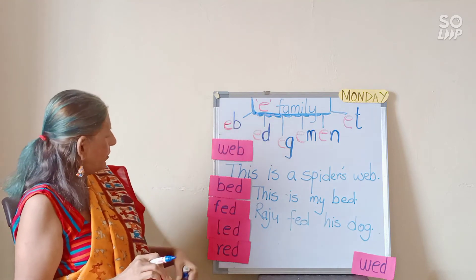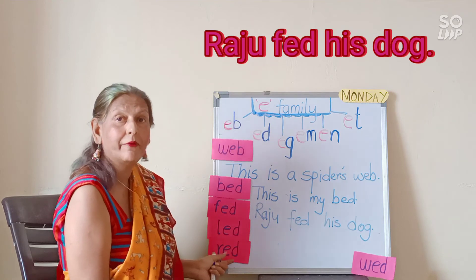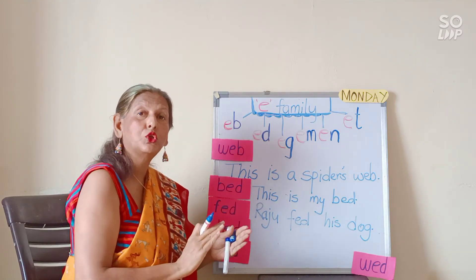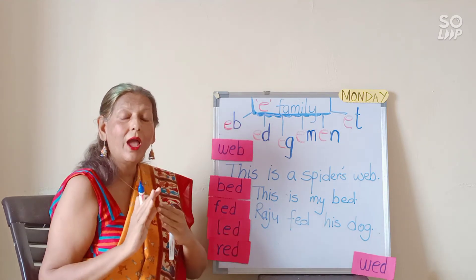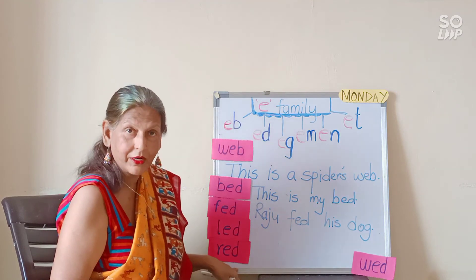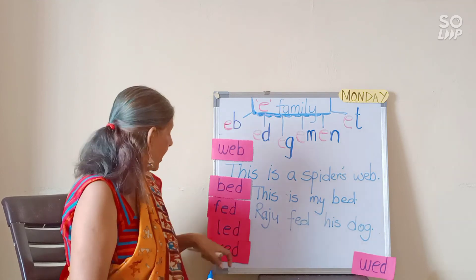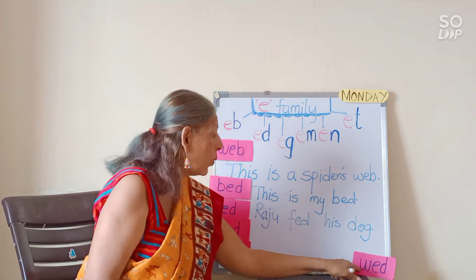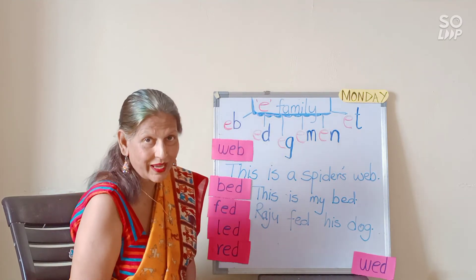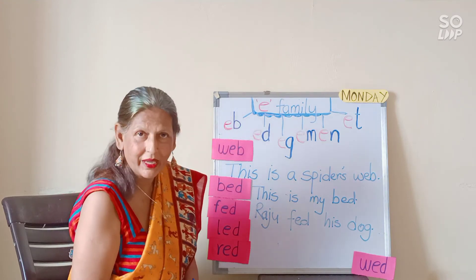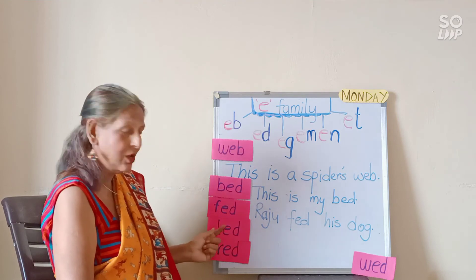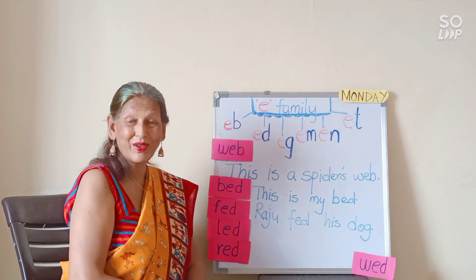Now, children, I want you to frame the other sentences. Led means leading — for example, 'He led me to my school' or 'I led the dog to the park.' Red — color red — for example, 'I love red color.' And Wed — W, Ed — Wed would be a short form for Wednesday or for a wedding. You are going to form the remaining three sentences for your work at home.